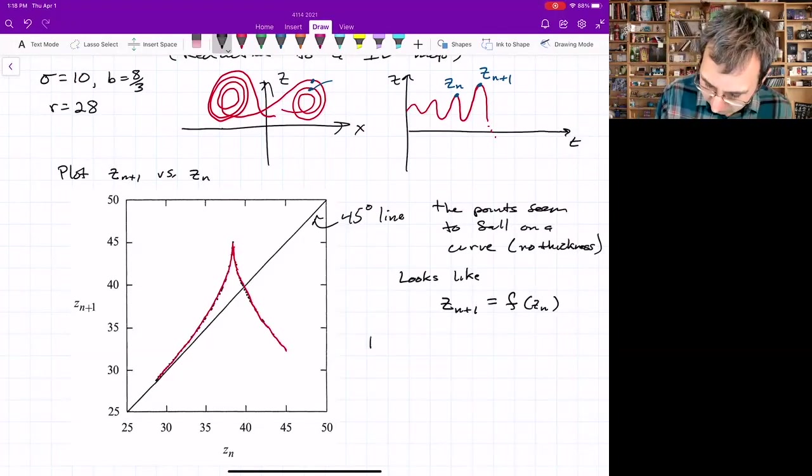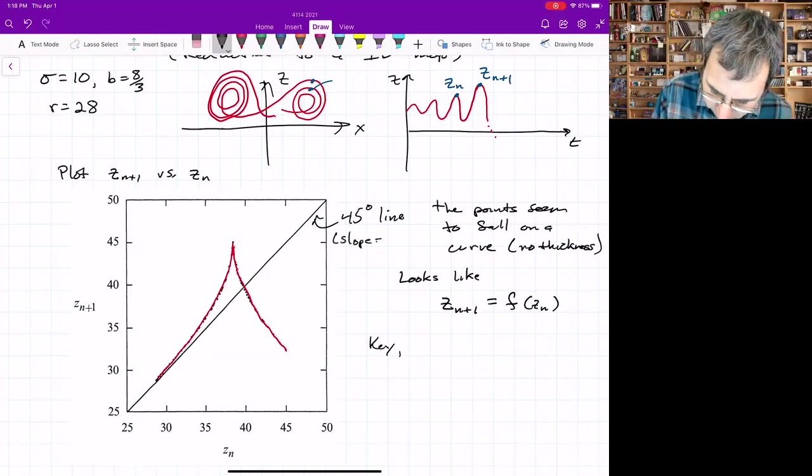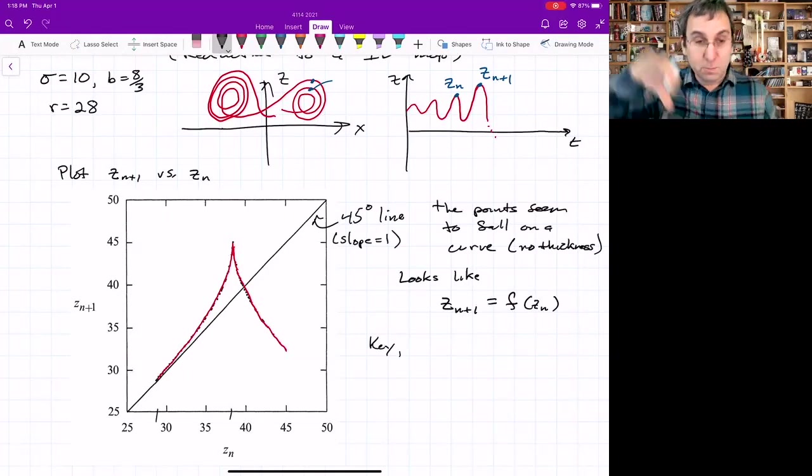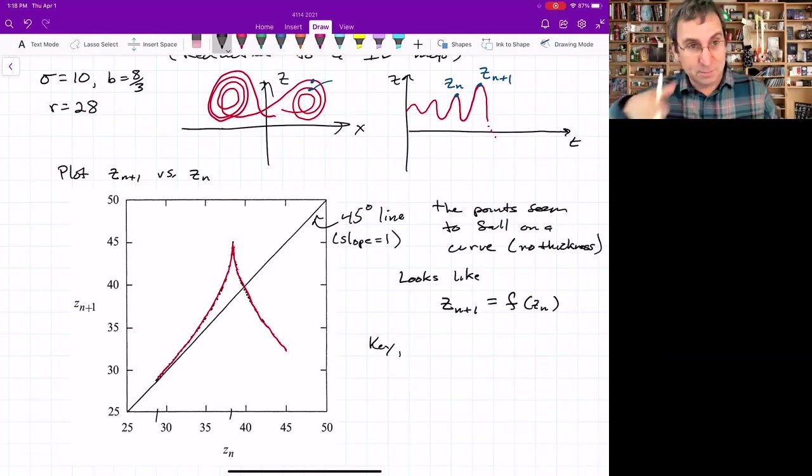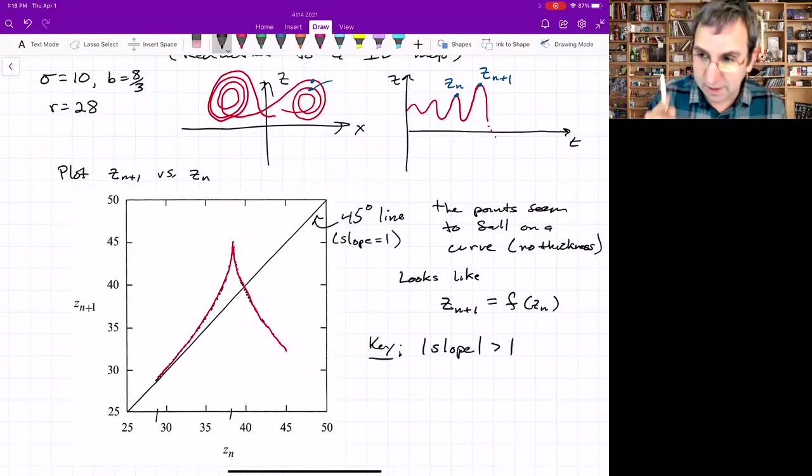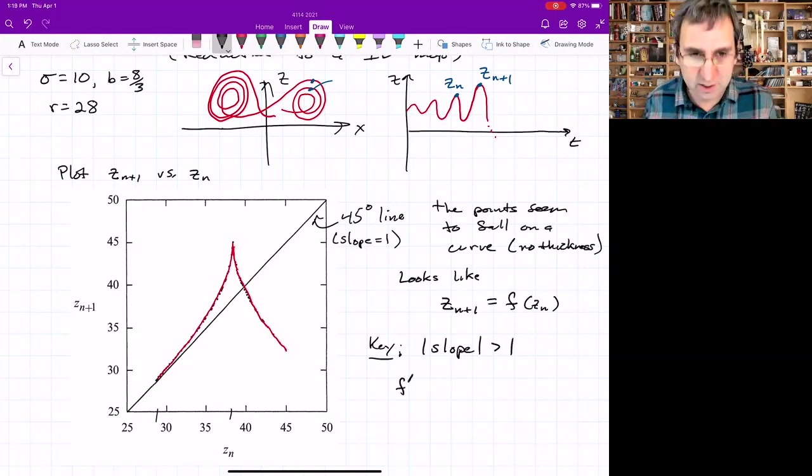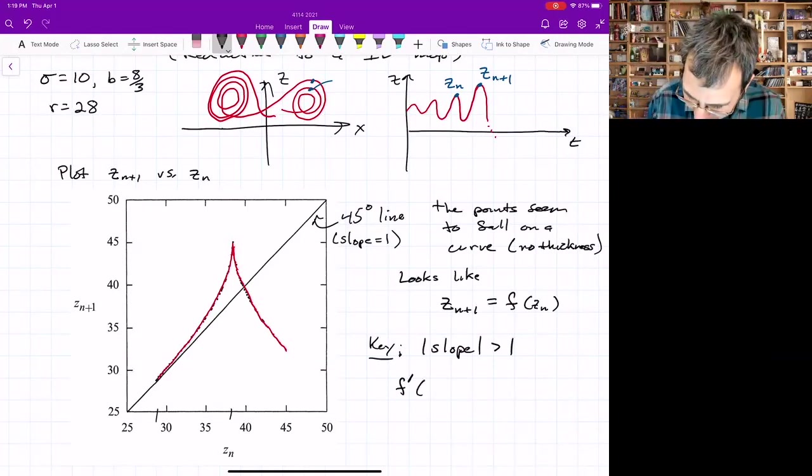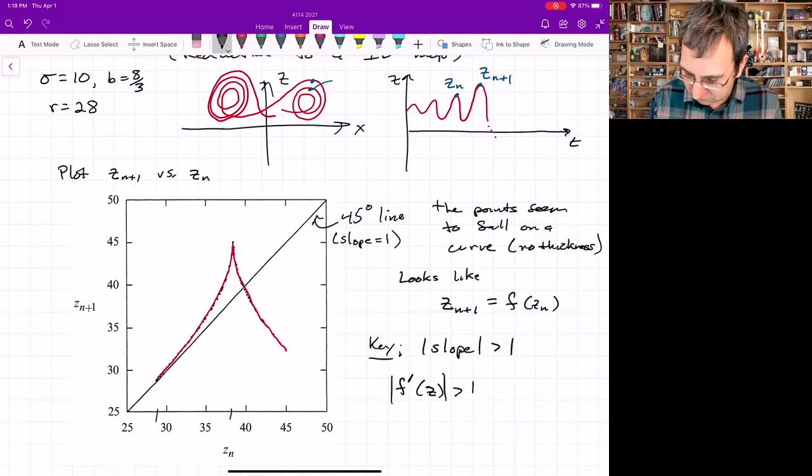It looks like a function. It looks like we have Z_{n+1} is some function of Z_n. And if you give me Z_n, this tells you where it will go. Now, one of the key things about this that will be important, this 45 degree line, that's where the slope equals 1. And notice, at least for this first part, before it gets to its peak, the slope is greater than 1. And actually after that peak, the slope is always less than 1.